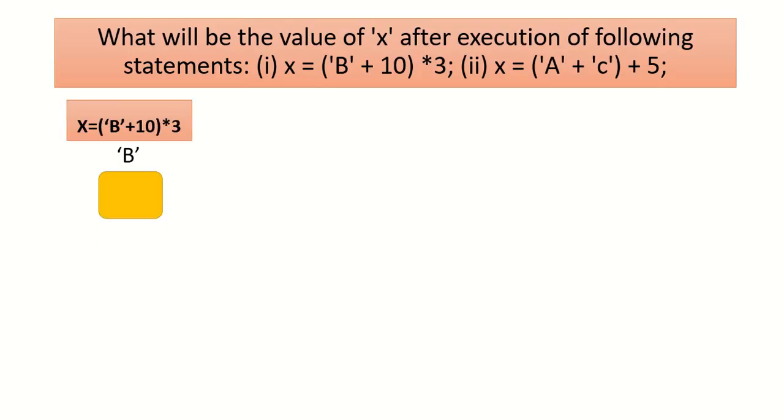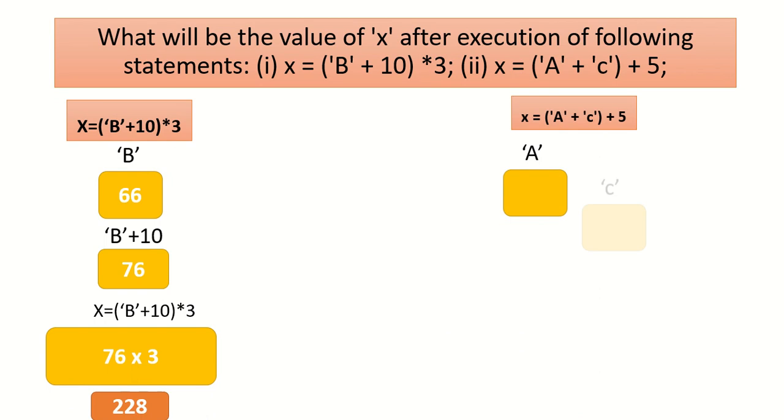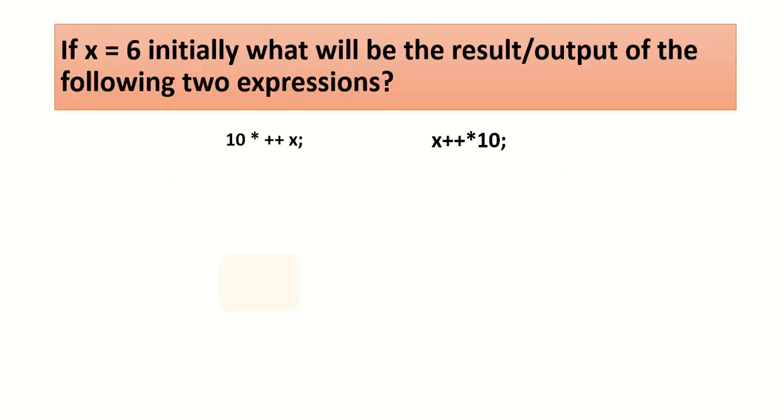Here you see b is given in single quotes and it will take the ASCII value of b. B plus 10 is 76, and then it will convert. The same with the next problem also.